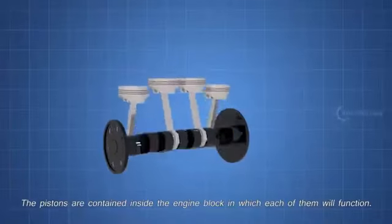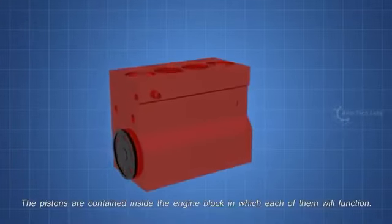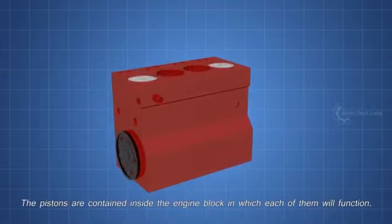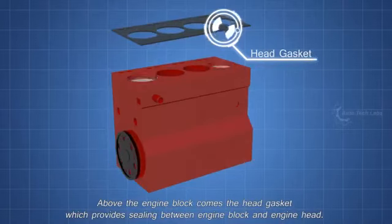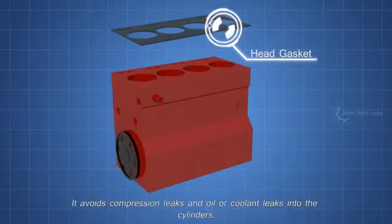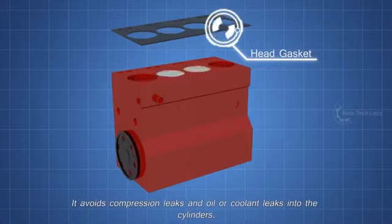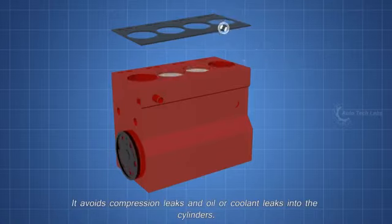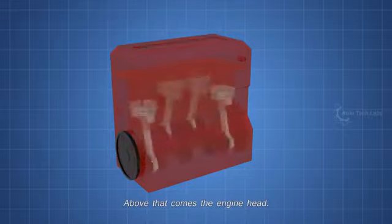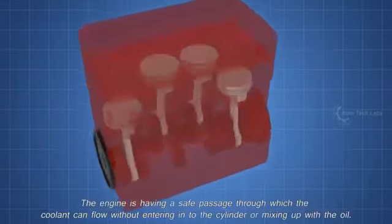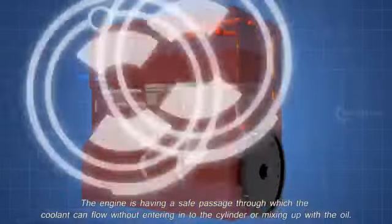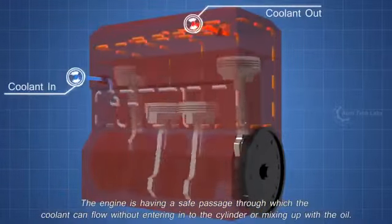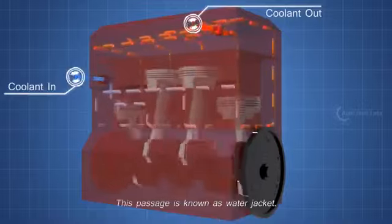The pistons are contained inside the engine block, in which each of them will function. Above the engine block comes the head gasket which provides sealing between engine block and engine head. It avoids compression leaks and oil or coolant leaks into the cylinders. Above that comes the engine head. The engine is having a safe passage through which the coolant can flow without entering into the cylinder or mixing up with the oil. This passage is known as water jacket.